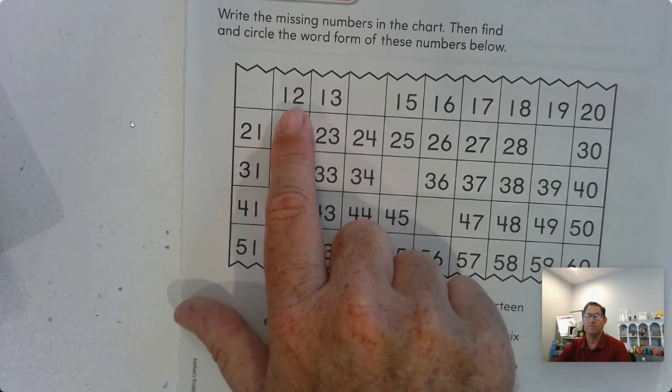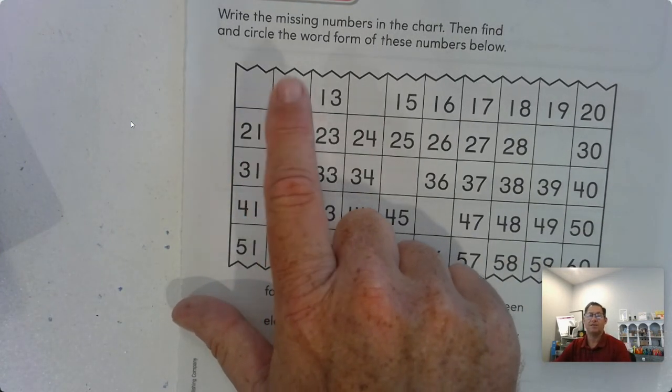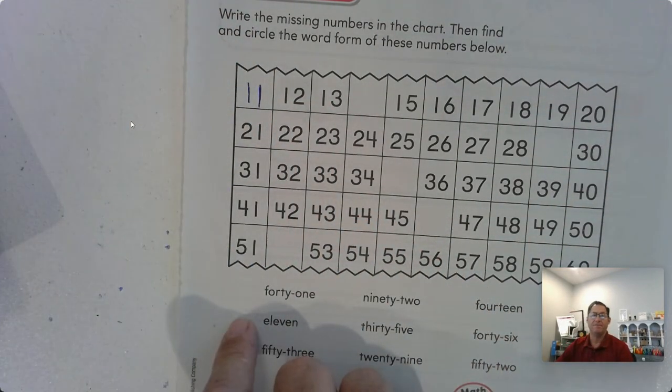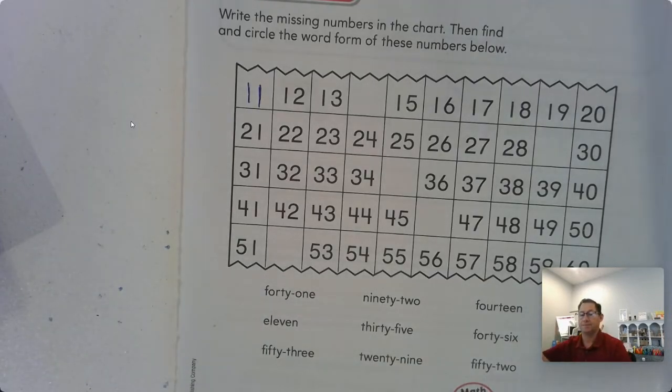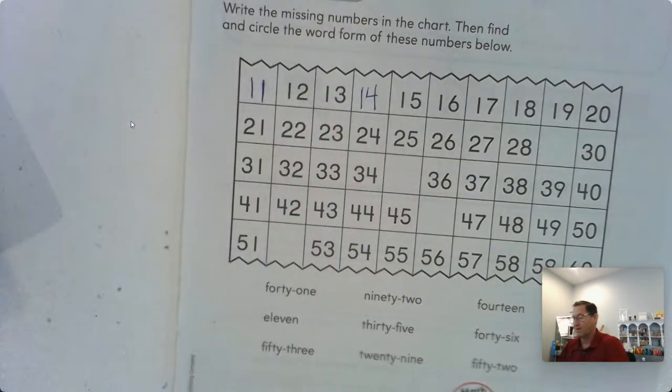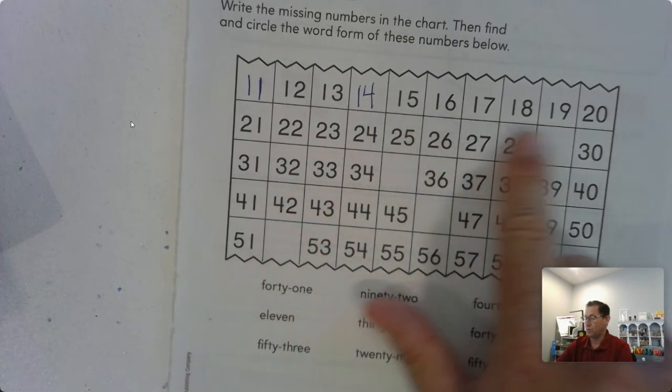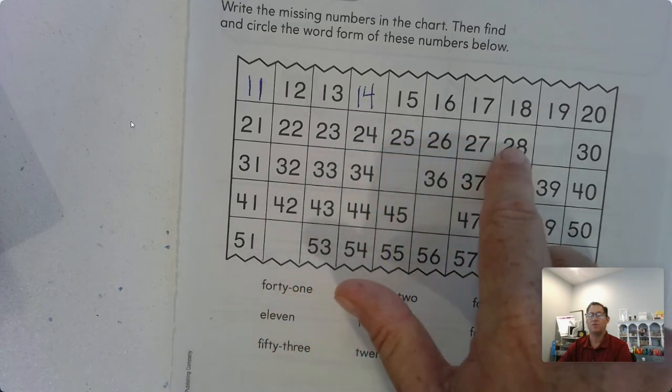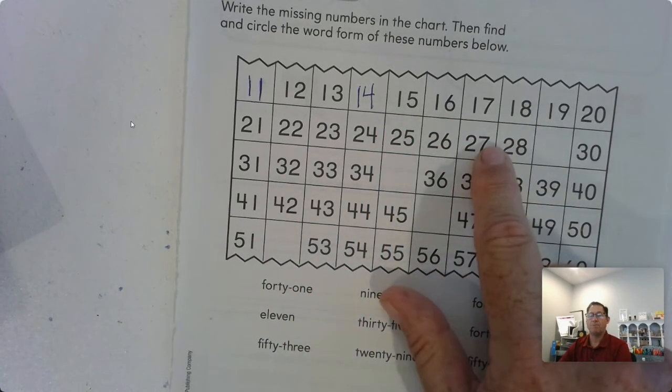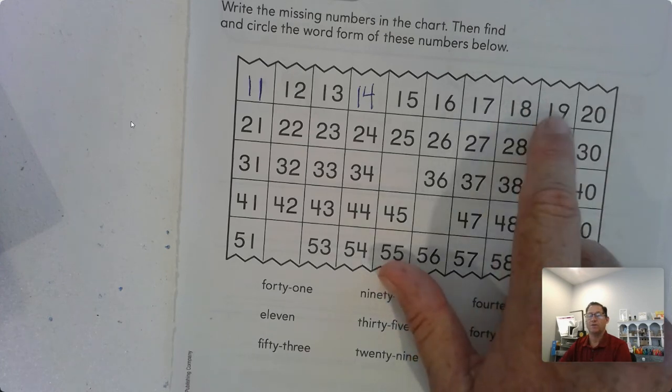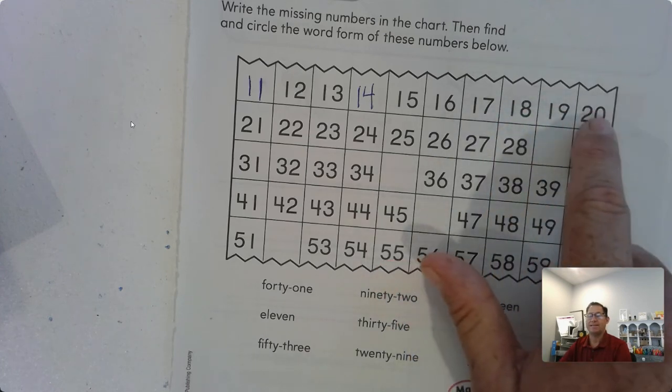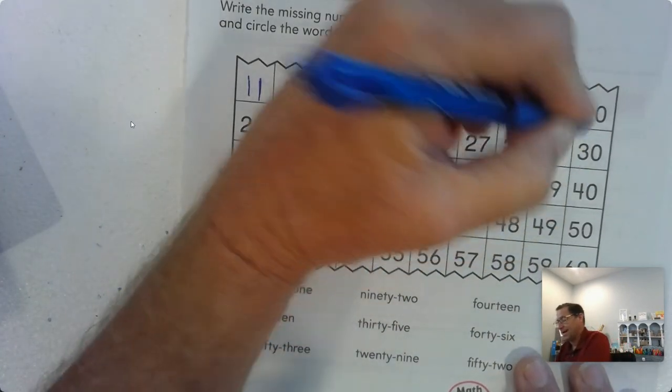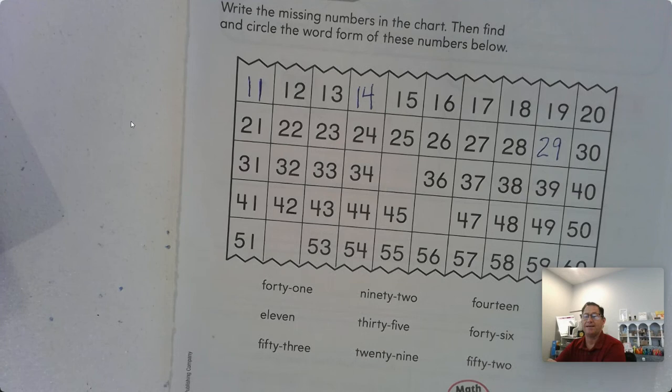What number comes before 12? Blank 12, 13. Well, that's 11, right? So 11, 12, 13, 14, and then it keeps going through 20. We have a gap between 28 and 30. We saw that 19 was between 18 and 20, so we're in the 20s. 29 comes after 28 and before 30.